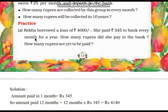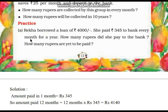Rekha borrowed a loan of Rs 4000. She paid Rs 345 to the bank every month for a year. How many rupees did she pay to the bank? How many rupees are yet to be paid? Here she borrowed a loan of Rs 4000 and she paid Rs 345 every month for a year.